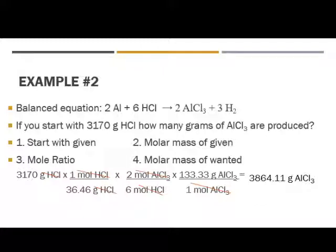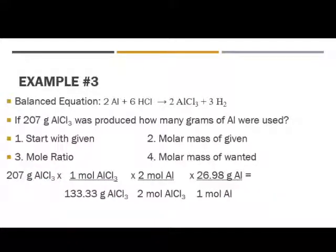I'm going to show you one more, and then I'm going to switch over and quickly look at a problem on your Poggle. Number three — this is the balanced equation: two aluminum plus six hydrochloric acid yields two aluminum chloride plus three hydrogen. It's the same reaction we've been working with. It says: if 207 grams of aluminum chloride was produced, how many grams of aluminum were used? So again, we start with our given, which is 207 grams of aluminum chloride.